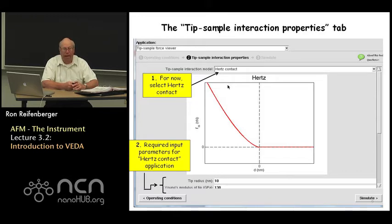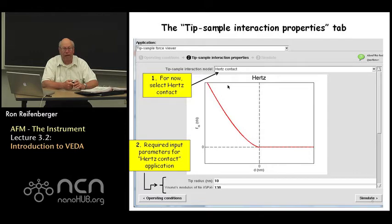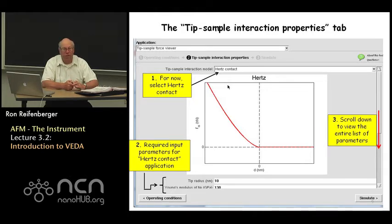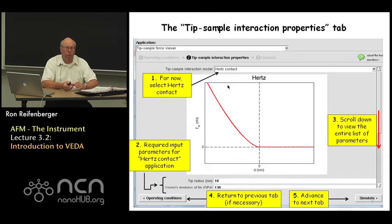How that increase occurs depends on the input parameters, and there are a variety of slots at the bottom of this web page that allow you to input things like the tip radius, the Young's modulus of the tip, the Young's modulus of the substrate, and other required parameters. You have to scroll down to view this entire list of parameters — unless you have a wide screen monitor you'll always need to physically scroll down to fill out all the required parameters. Again, there are default parameters suggested and you can use those for your first time. You can always return to the previous tab — that's displayed on the bottom left side — or advance to the next tab on the bottom right, so you can click back and forth between these.